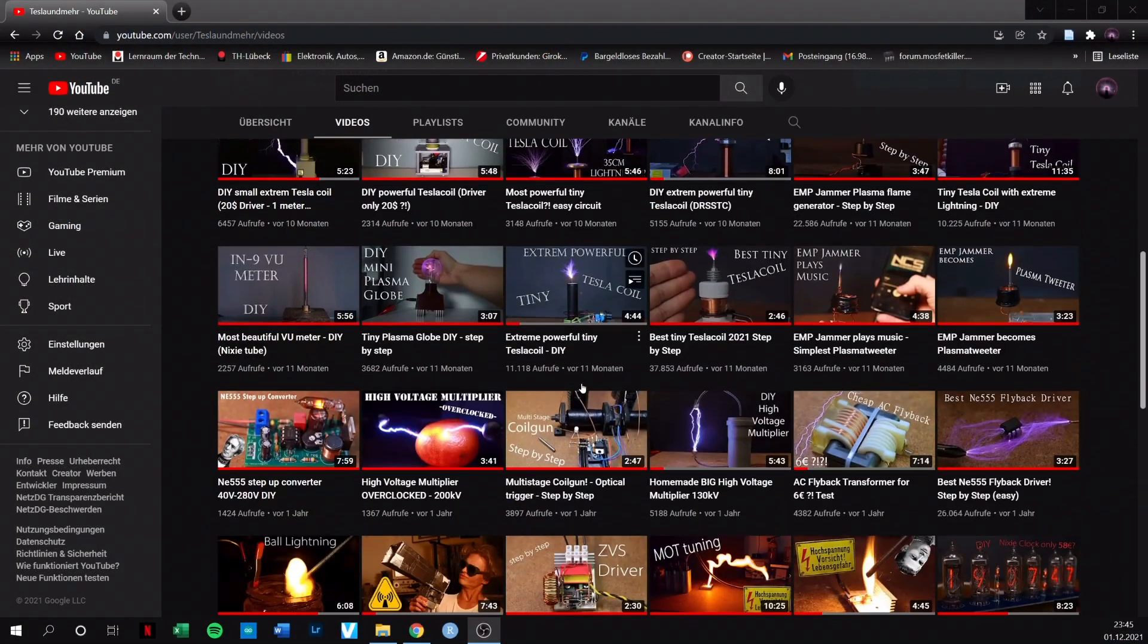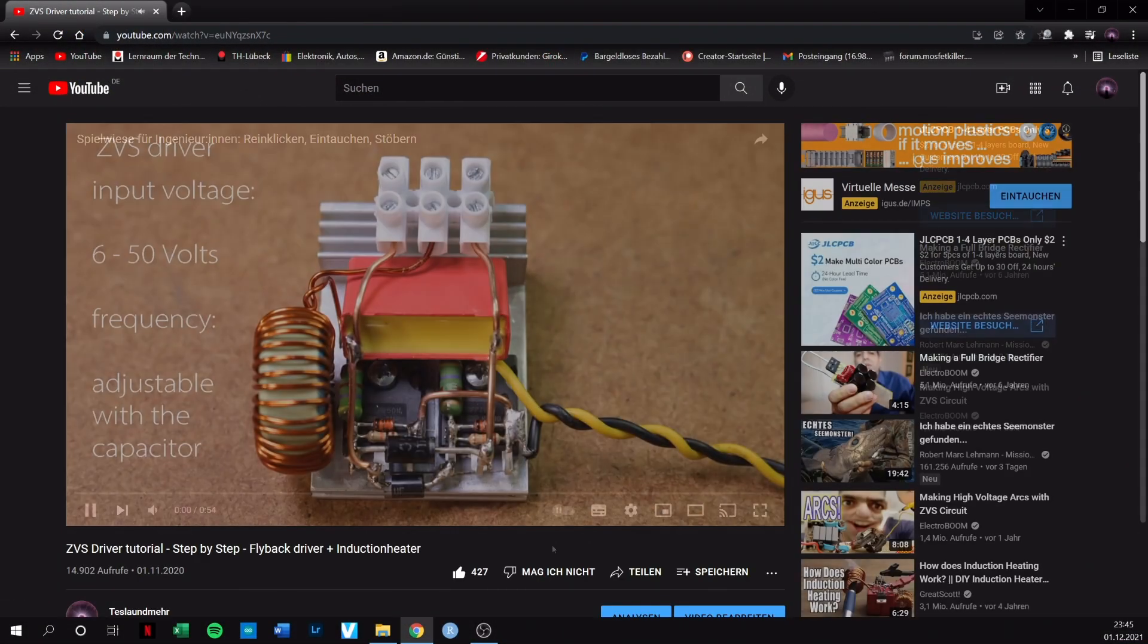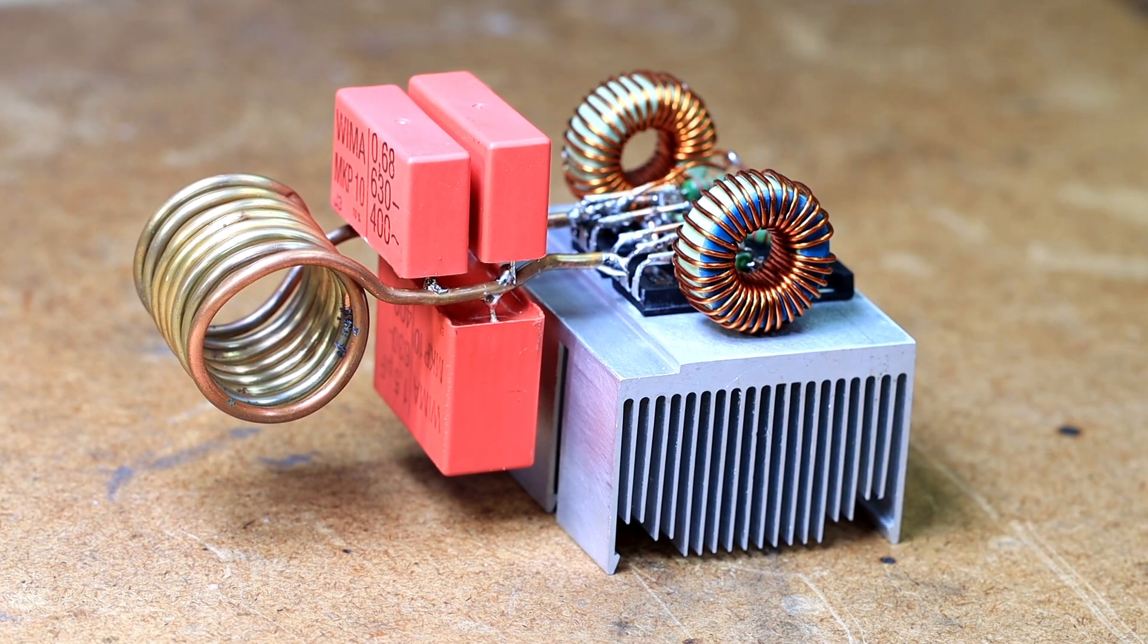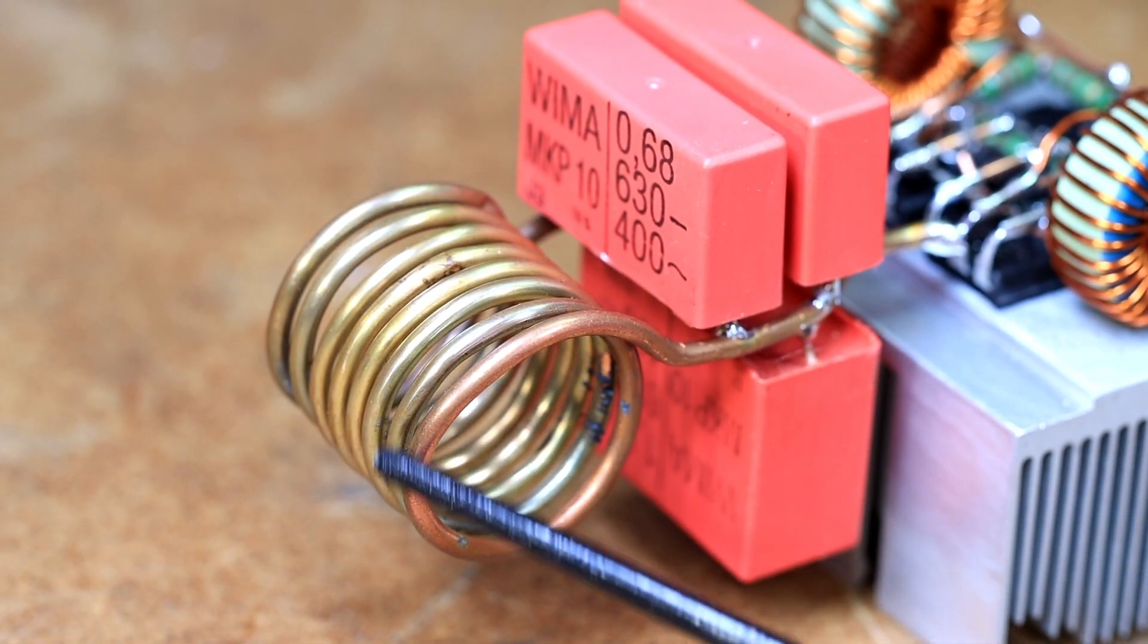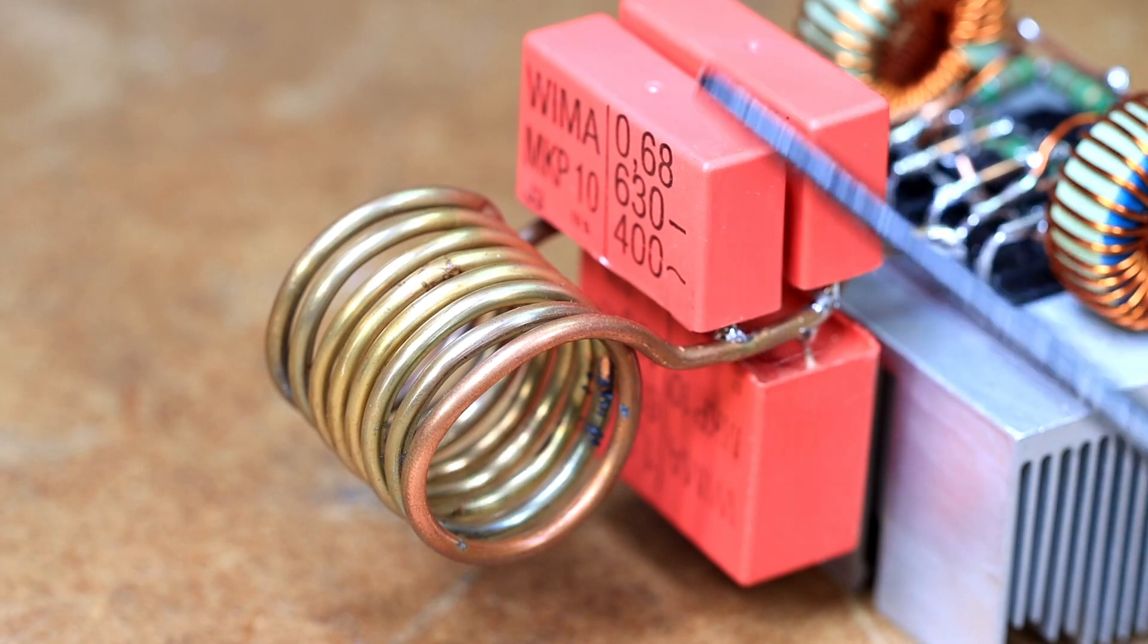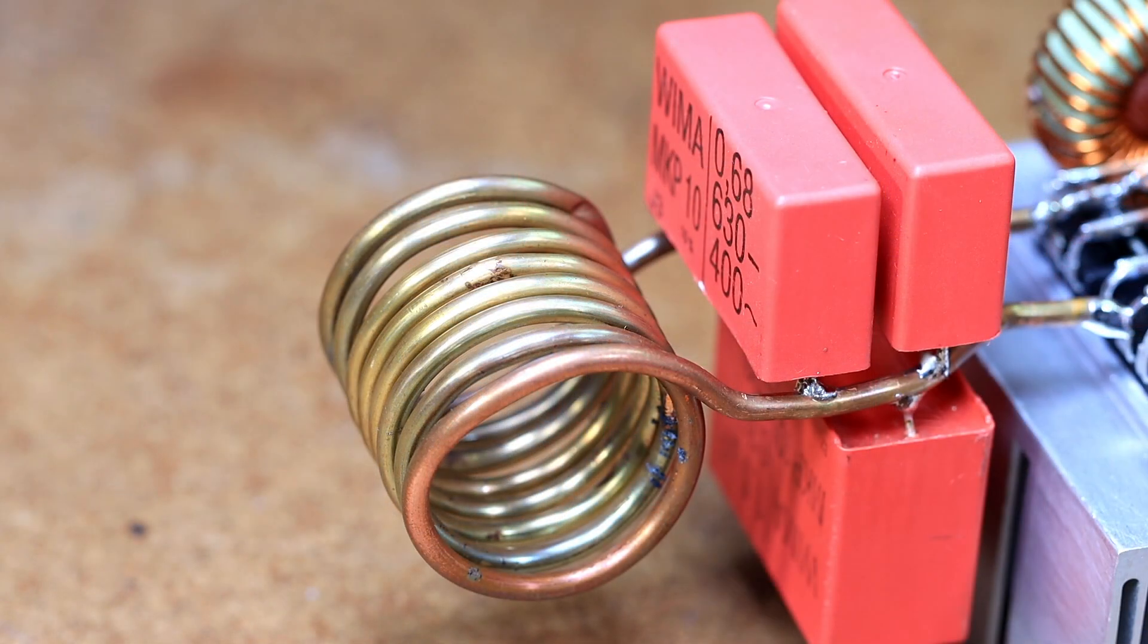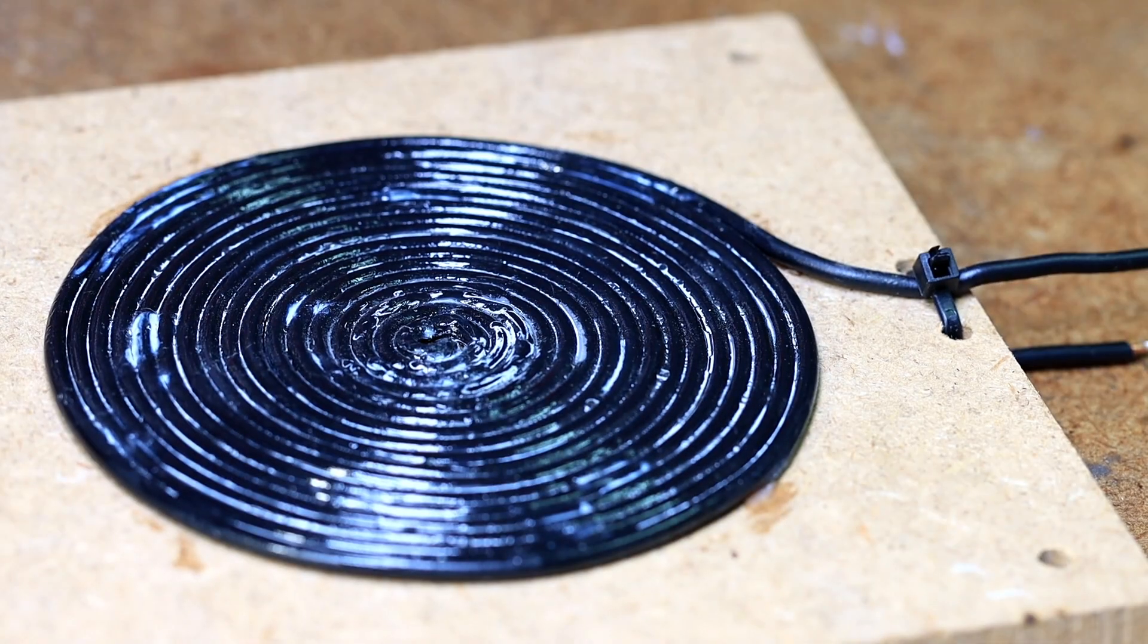Do you want to know how to build such a circuit easily? Then check out my tutorial. I built a ZVS circuit. The oscillation circuit itself which also determines the oscillation frequency consists out of this coil and the film capacitor here.